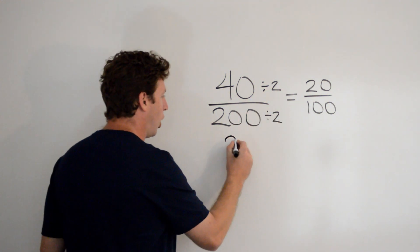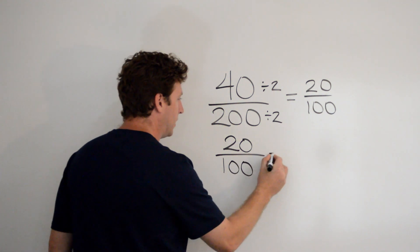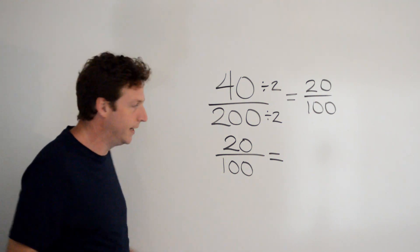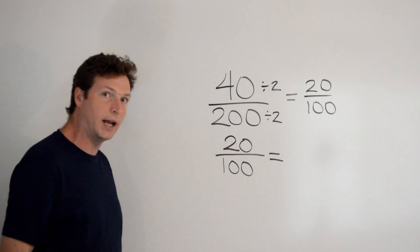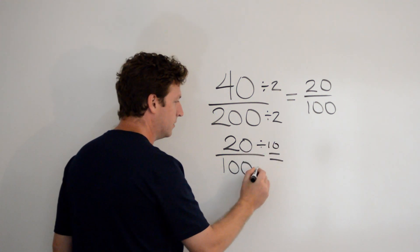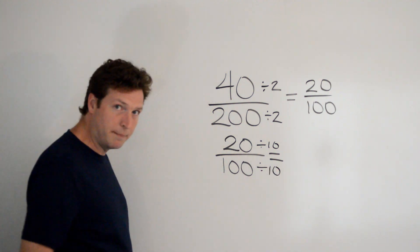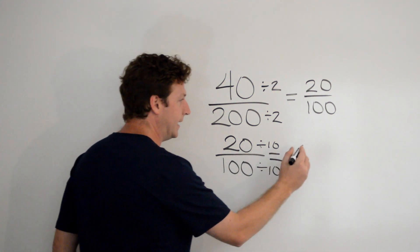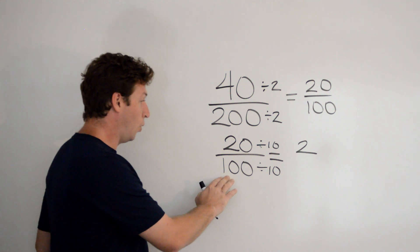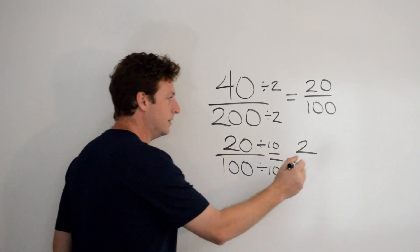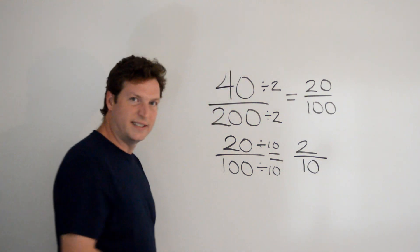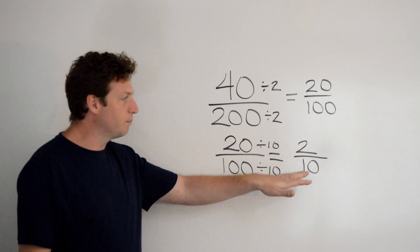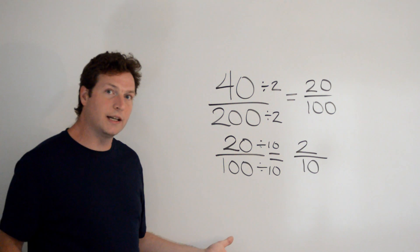Let's take 20 over 100 and reduce it again. This time, I'll divide by 10, because 10 goes into both 20 and 100. Remember, if we do it to the top, we need to do it to the bottom. 20 divided by 10 is 2, and 100 divided by 10 is 10 — another equivalent fraction. And I can see these are both still even numbers, so we can divide by 2 again.